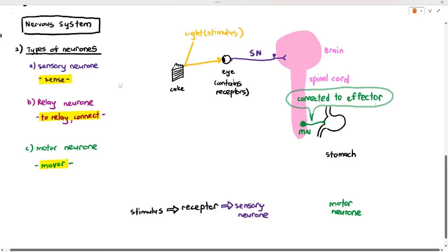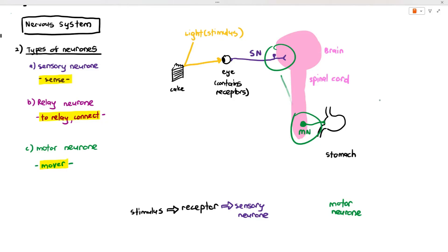The sensory neuron and the motor neuron in this situation are quite far away. So, how's the sensory neuron supposed to communicate with the motor neuron that, hey, there's cake in front of us, we need to do something about it?